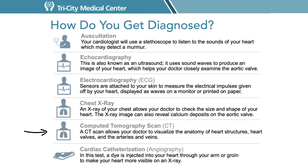A CT scan allows us to visualize the anatomy of the heart, the heart structures, including the valves and the arteries and veins. A cardiac catheterization, also known as cardiac angiography, is a minimally invasive procedure where dye is injected into the arteries that supply blood to the heart in order to visualize the arteries for blockages. This procedure also allows us to examine the heart valves to an extent.